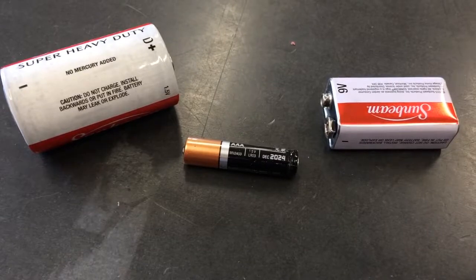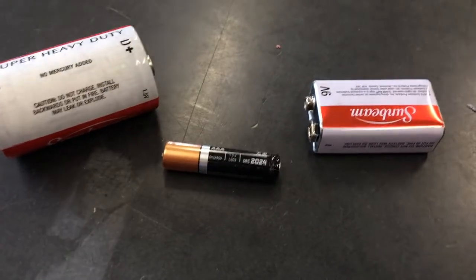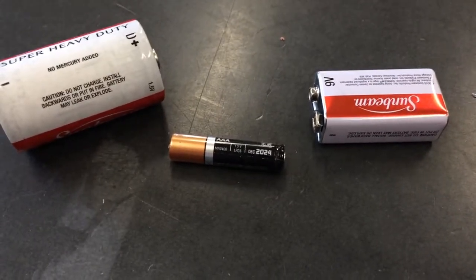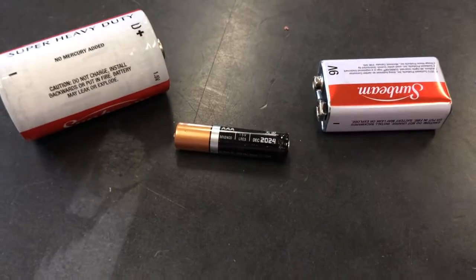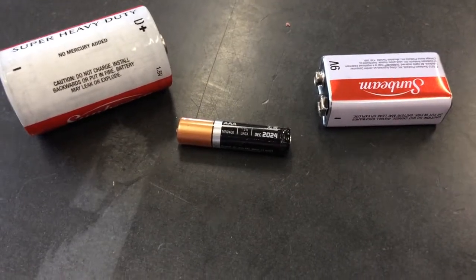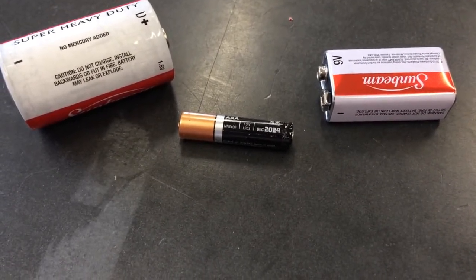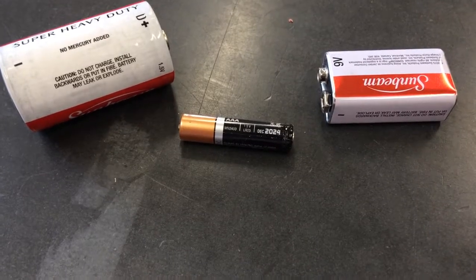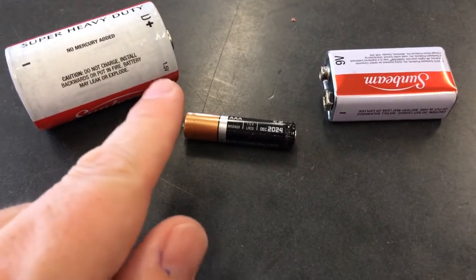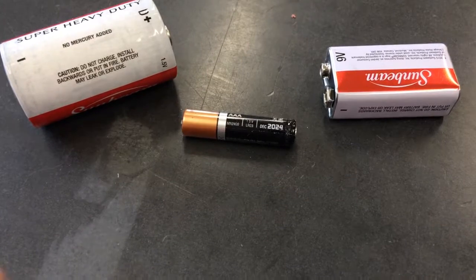So here's some various batteries. And it's informative to look at the different types. The 9-volt battery clearly has 9 volts. But the other two, the D and the AAA, I don't know if you've ever looked at them, but they actually have the same voltage, 1.5.